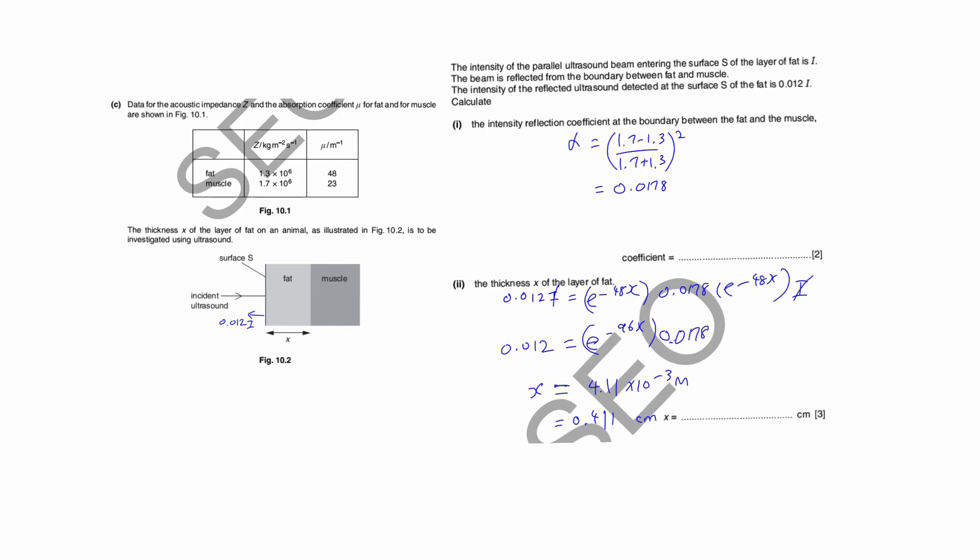In this question they gave you what came out. First, find the intensity reflection coefficient — that's easy. Fat-muscle boundary: use the values for Z of fat and muscle, and you should be able to get this. Next, to find the thickness of the layer of fat, use the amount that came out. Remember: it passes through fat (absorbed), then reflected, then absorbed again. So the final value equals the ratio of absorbed: I/I₀ = e^(−kx), so using fat first it's e^(−48x).